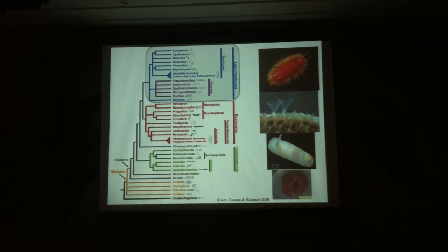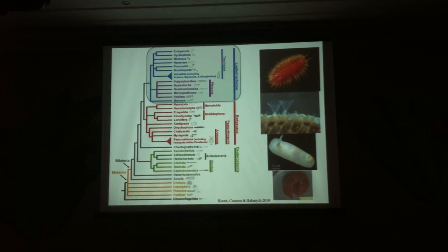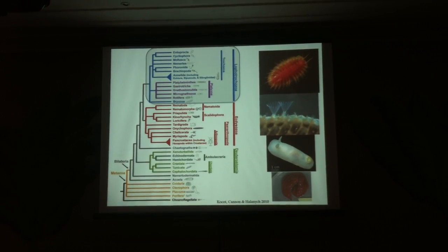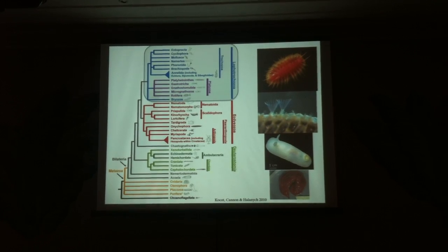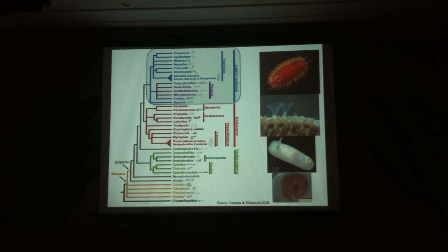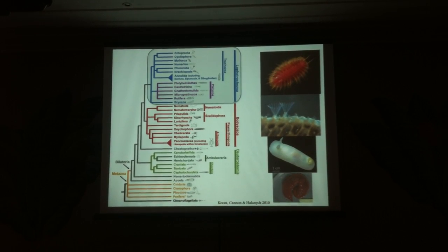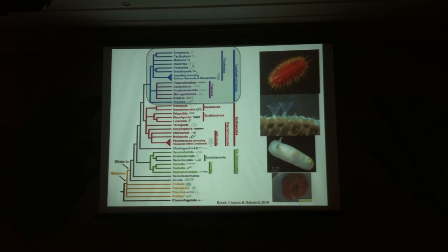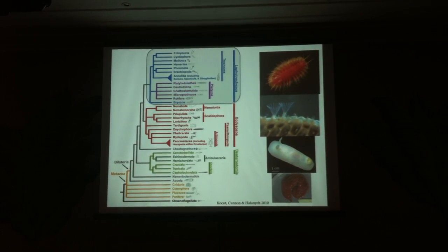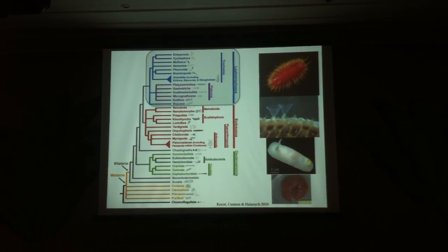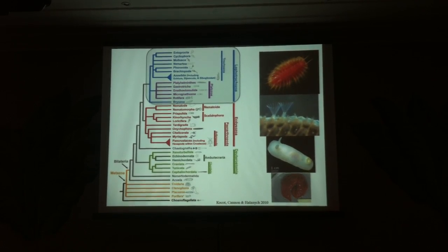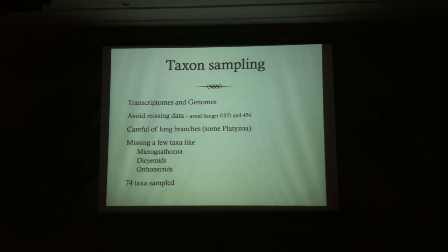Generally, across previous studies, the Lophotrochozoa group may be split into two different groups: Trochozoa and Platyzoa. Trochozoa includes things like mollusks, annelids, and nemertines — and we also include brachiopods and phoronids. Platyzoa includes flatworms and many meiofaunal types of organisms, in particular things like gastrotrichs, gnathostomulids, rotifers, and acanthocephala, as well as a few others like cycliophora, entoprocta, and cycliophorans. But our understanding of the relationships of these groups has not really panned out well, and we keep trying to do more to understand what's going on.